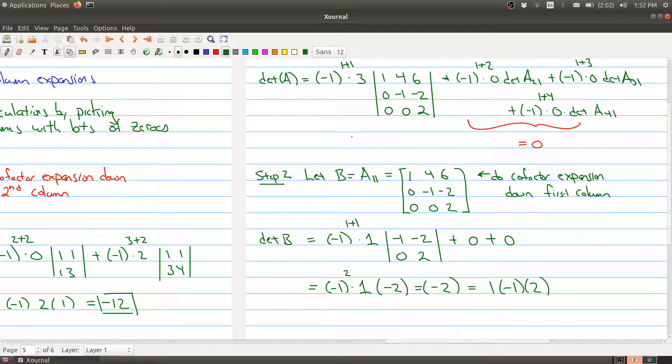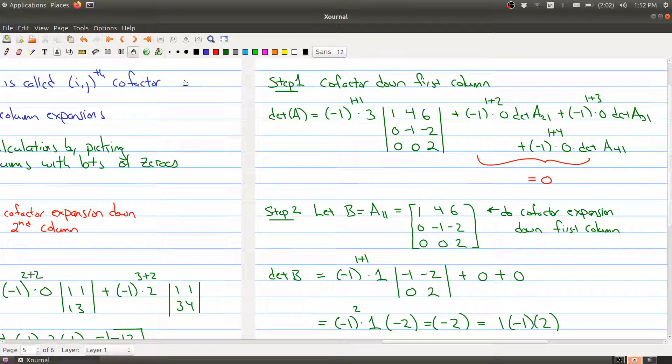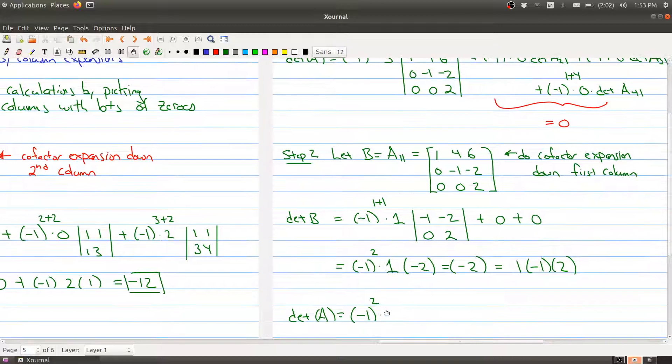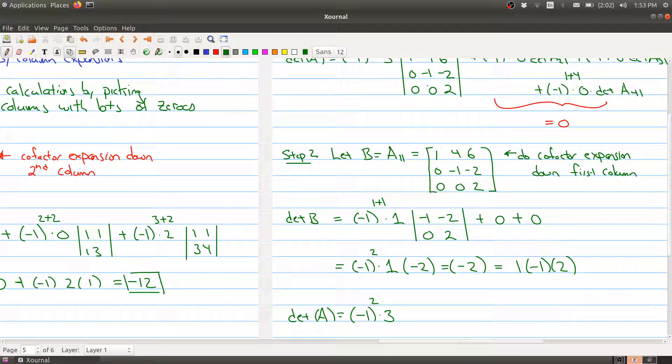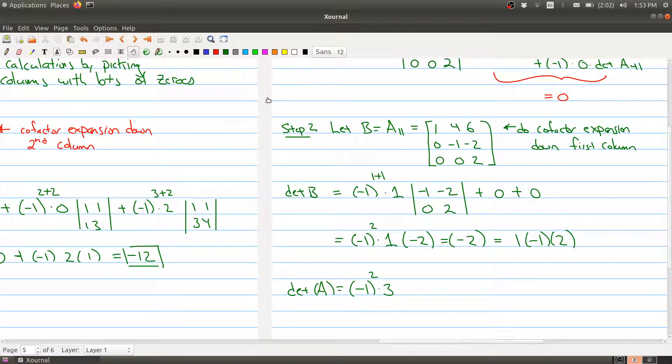Now we have to go back and finish what we're doing. So we have that the determinant of A is (-1)^2 times—I'm going to have to scroll back down to see what it was—so the 3, we get a 3 right here, and then the determinant of that matrix which we just computed. So we have times 1 times (-1) times 2, and I can rewrite this as 3 times 1 times (-1) times 2.